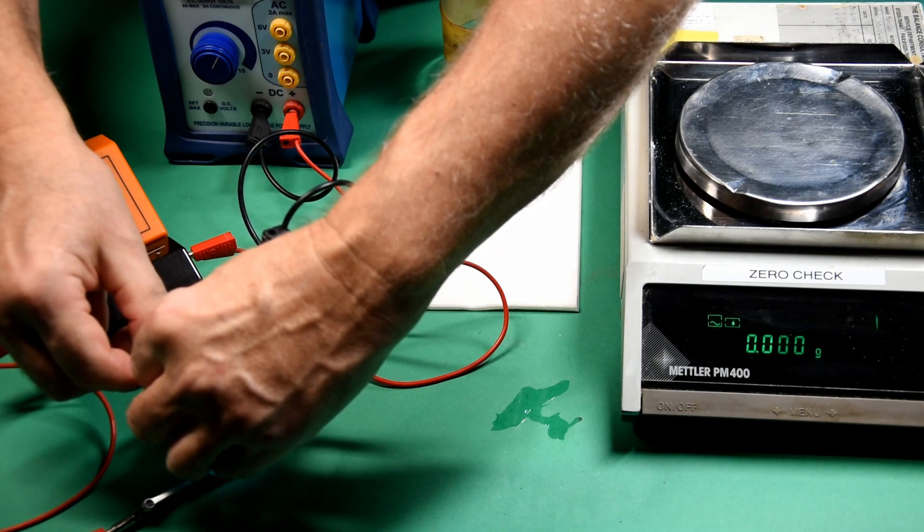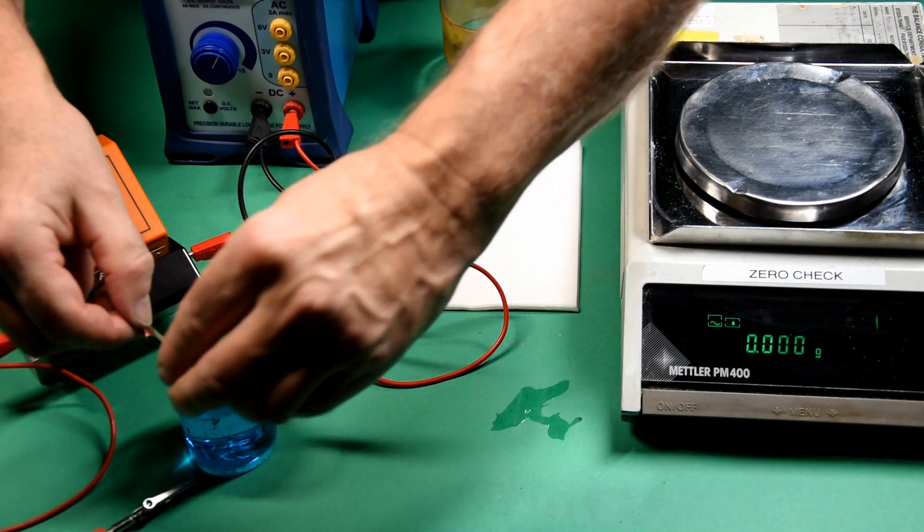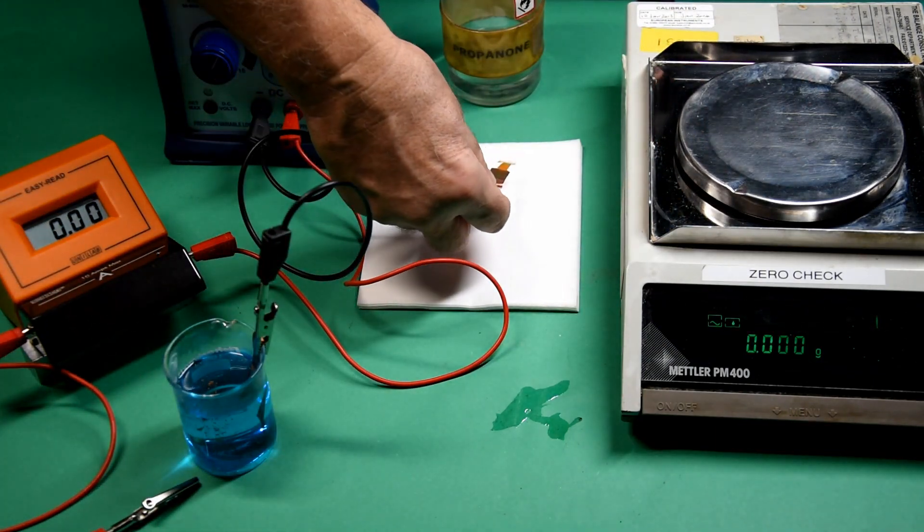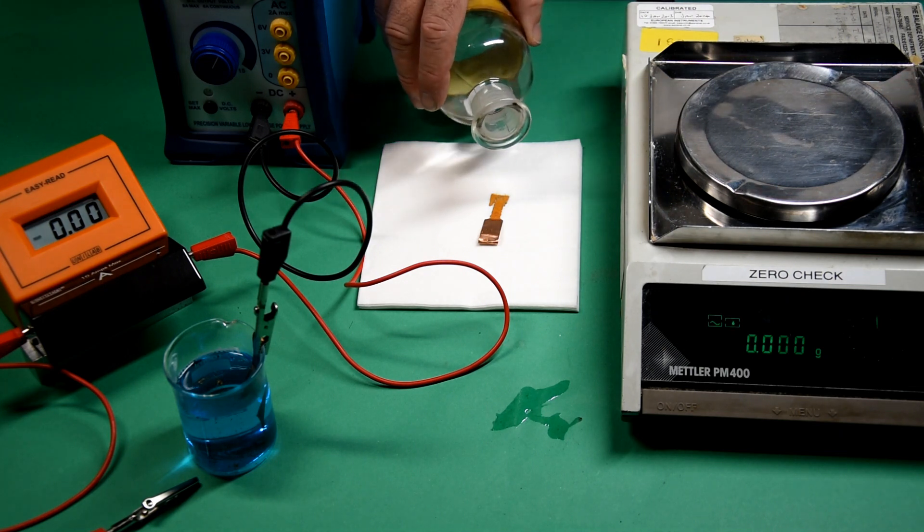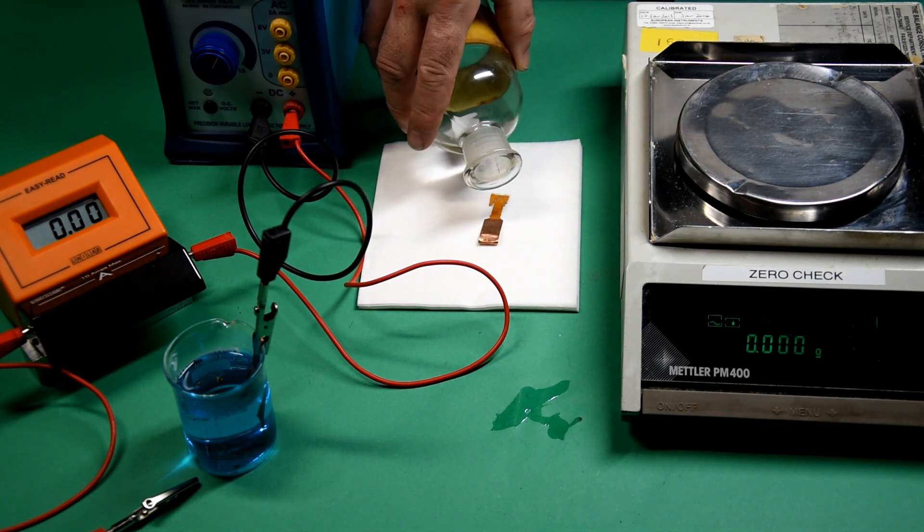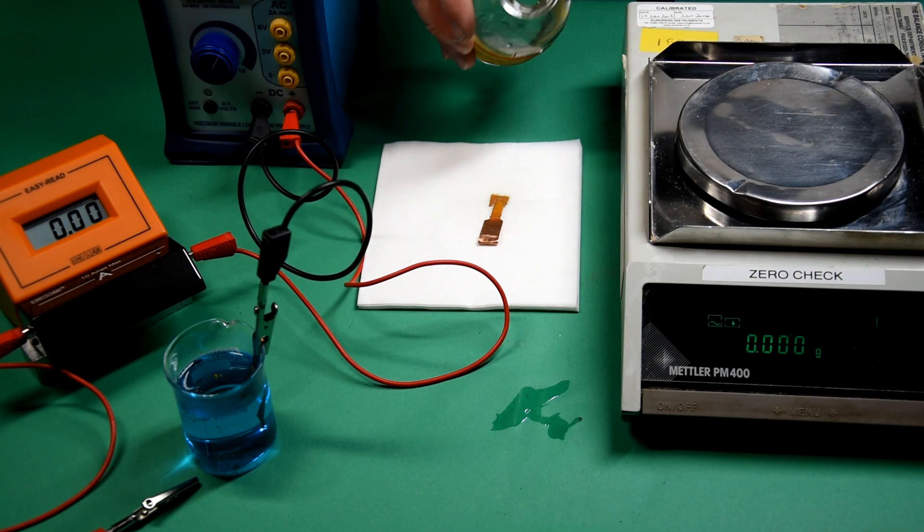Now we can remove the anode, but before we weigh it, we have to dry it, and I'm going to do that using propanone. I'll soak it with propanone and then leave it to evaporate, resulting in a dry electrode.